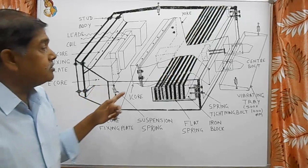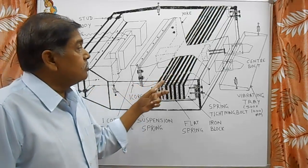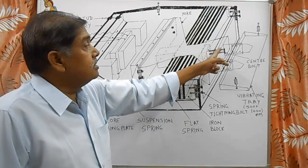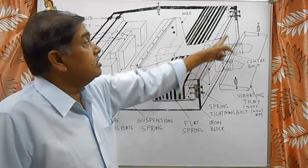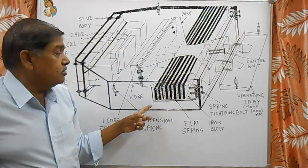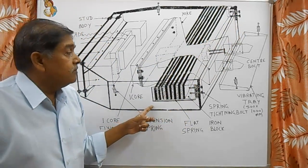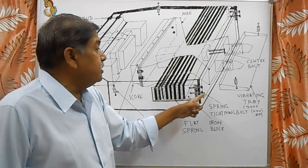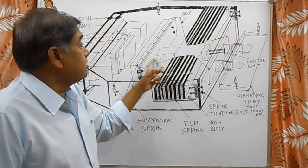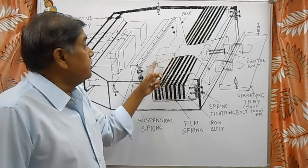In addition to this, sometimes these spring plates are broken, so in that case also feeding is less. Sometimes these center bolts are loose and the side bolts are loose, so feeding will become reduced. To increase the feeding of this feeder, we have to tie these side bolts completely and the center bolts.